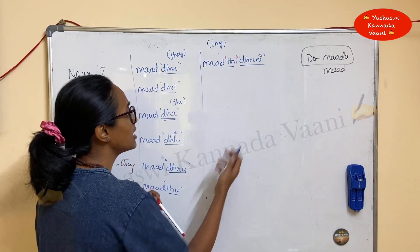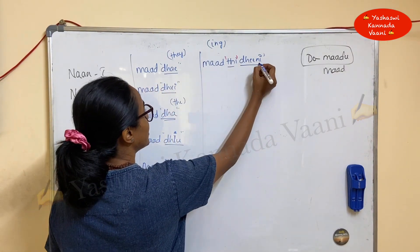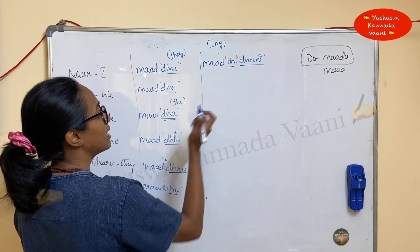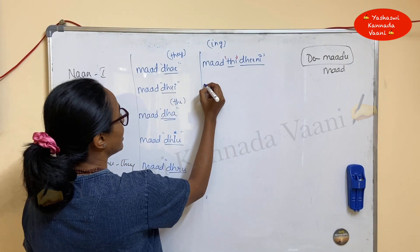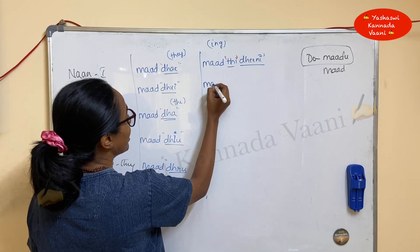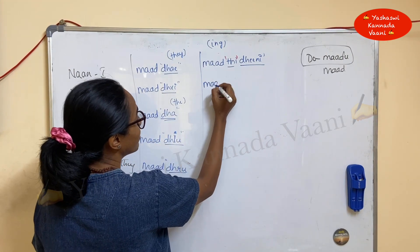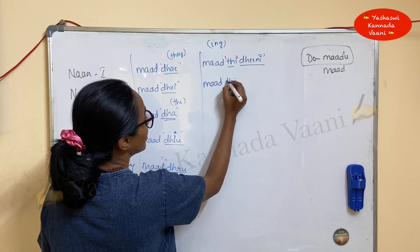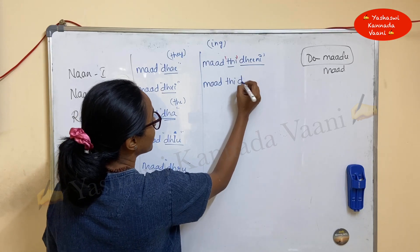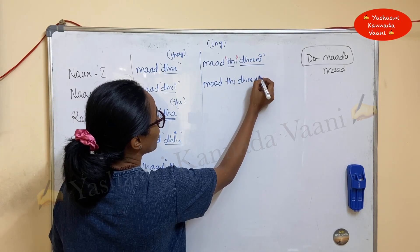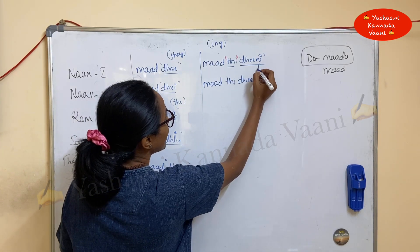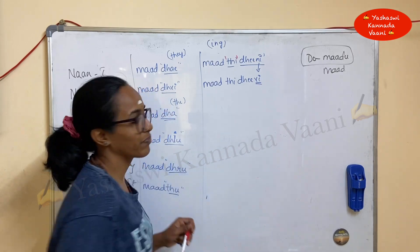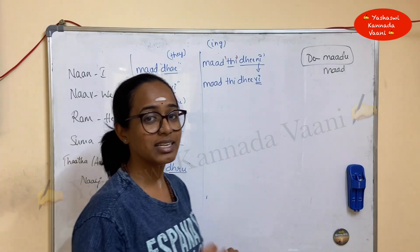Now observe the last part. It will be 'nan maad ti di ni.' Only the last part 'ni' will change — it changes to 'vi' for the plural, meaning 'we are doing' or 'we are working.'